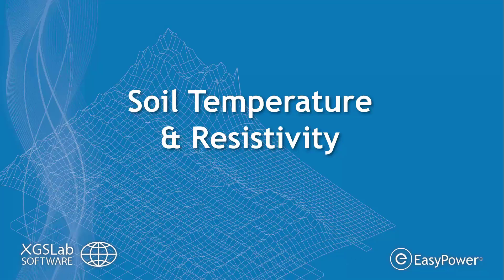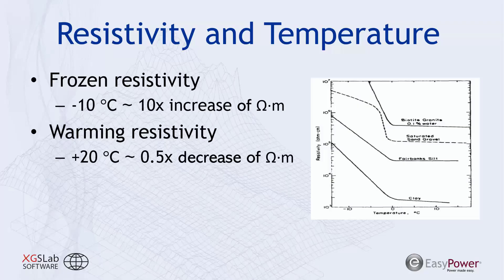Let's look at how temperature relates to soil resistivity. The temperature of soil can dramatically affect its resistivity. For example, if you measure a sample of clay just above freezing, then test that same sample 10 degrees Celsius colder, you could see a resistivity increase of 6 to 10 times on just that 10-degree swing. On the warming side, increasing soil temperature by 20 degrees could reduce that layer's resistivity by up to half, depending on the material.